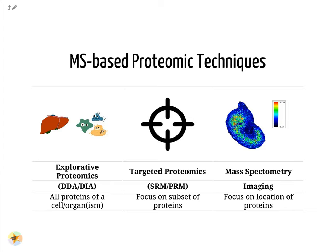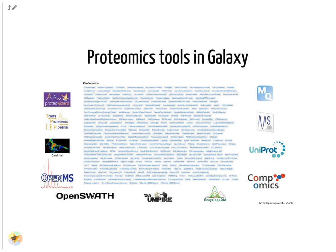A second technique is targeted proteomics, which measures only a predefined set of proteins with very accurate quantification. A third technique is mass spectrometry imaging, which measures the spatial distribution of peptides or proteins in thin tissue sections. Plenty of software for DDA, DIA and mass spectrometry imaging are available in Galaxy. Here is an overview of all proteomics tools installed on the European Galaxy server; other public Galaxy servers offer a similar or complementary proteomic toolkit.